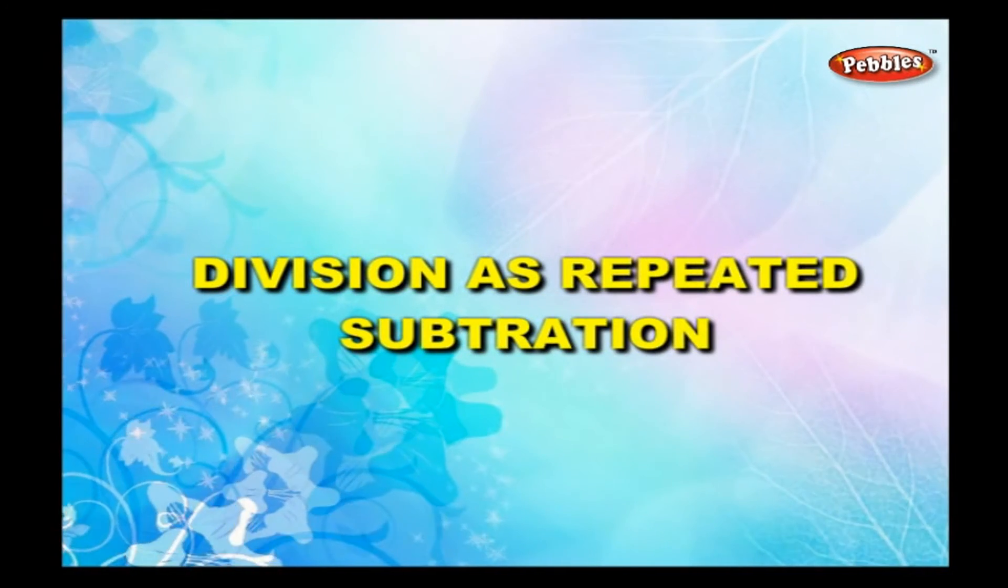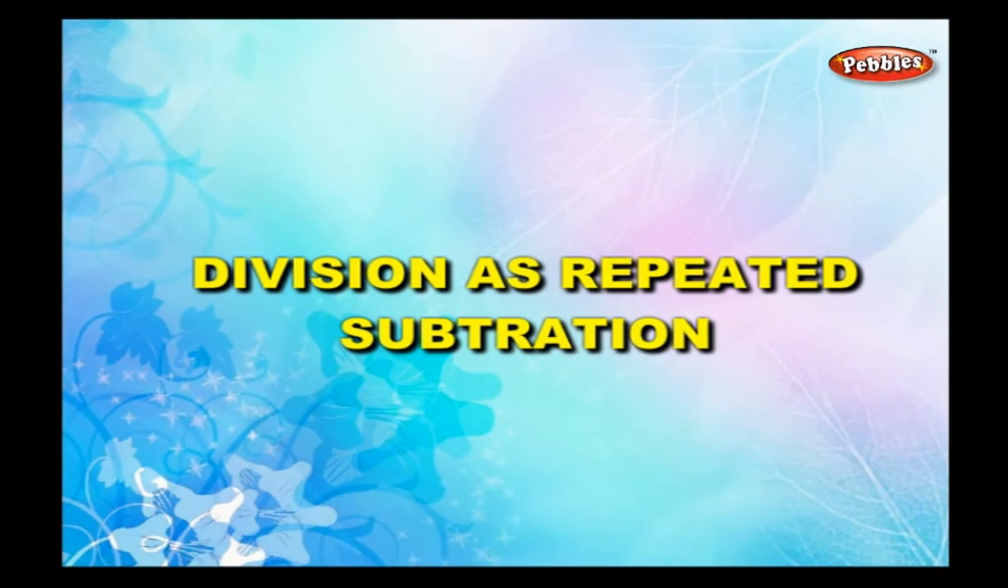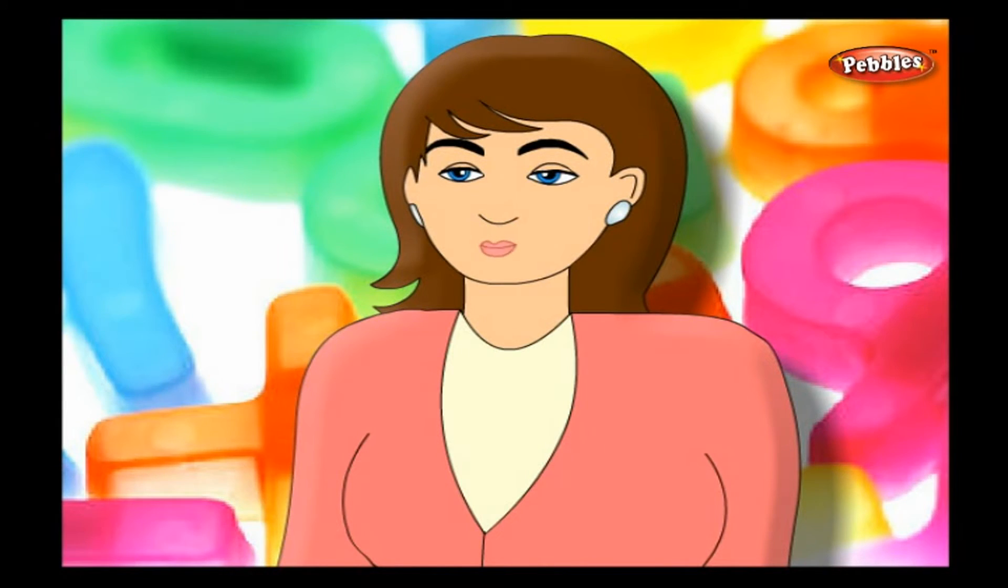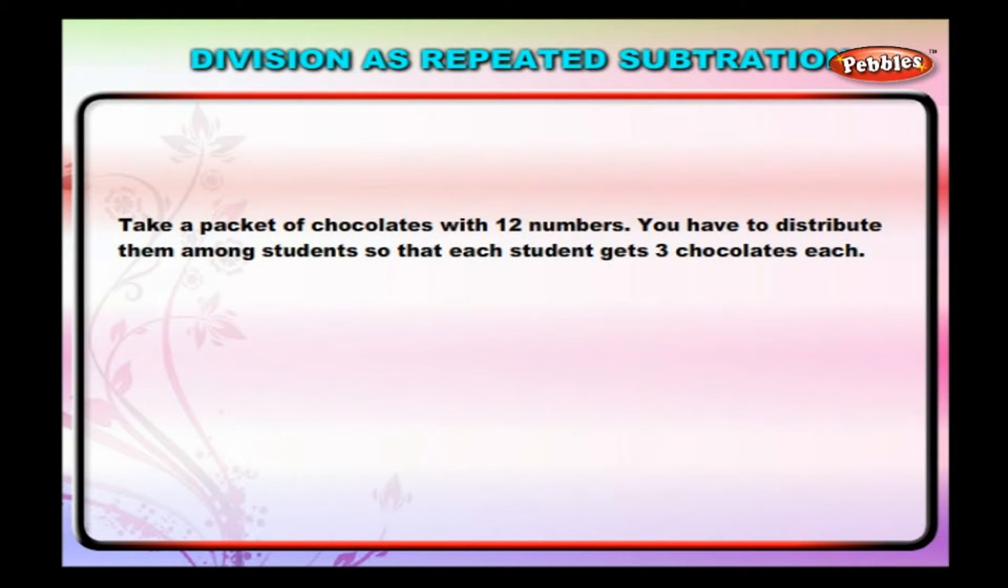Division as repeated subtraction. We know that division is repeated subtraction. Let us learn this through an example. Take a packet of chocolates with 12 numbers.